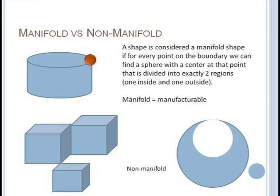Most modeling systems also assume that we are only allowing manifold shapes. The mathematical definition for a shape to be a manifold requires that every point on the shape has some sphere centered at that point that is divided into exactly two regions, one inside and one outside. Ultimately every manufacturable part will be a manifold shape. But as we mentioned before, it's possible that your geometry may pass through some intermediate stages during an operation where it becomes non-manifold.